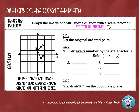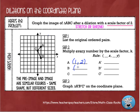The scale factor is going to be really important in this lesson. This time the scale factor is 2, and we're going to talk about how we can dilate figure ABC by a scale factor of 2. The first thing we're going to do is list the original ordered pairs. The original ordered pair for point A is (1, 2), for point B is (1, -1), and for point C is (0, 1). Those are the coordinates of my pre-image.